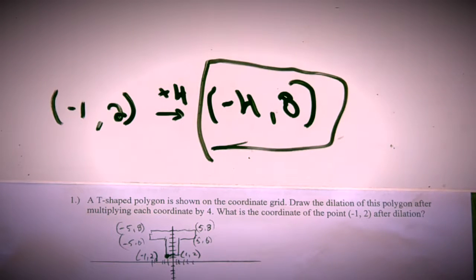And this is your answer: (-4, 8). That's the coordinate. Now it's been transformed. As you can see, it's going to get bigger. It's up to you to do all the other coordinates and see what kind of shape you get: a bigger T.